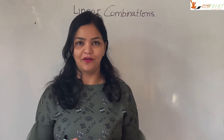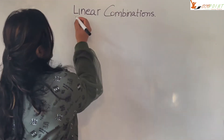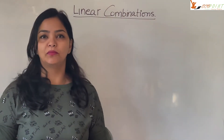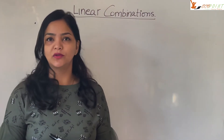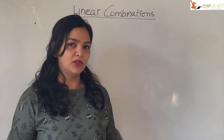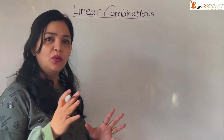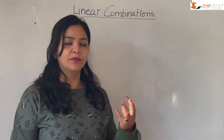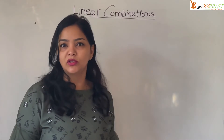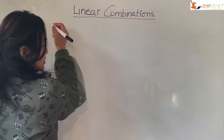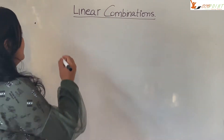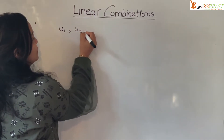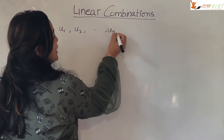Hey guys, welcome to another lecture from EcoPoint. Today let's work on the concept of linear combinations of given vectors. What is a linear combination? What are vectors? For now, just understand that vectors can be taken as points in any n-dimensional Euclidean space. Suppose you have u1, u2, and so on up to un.